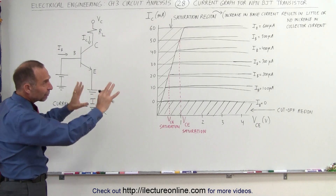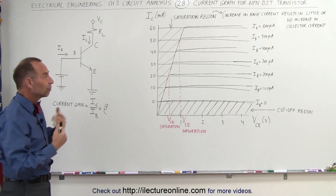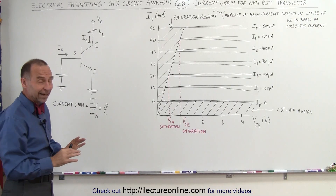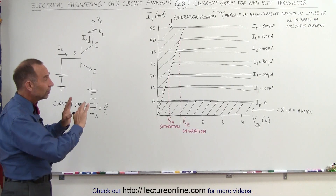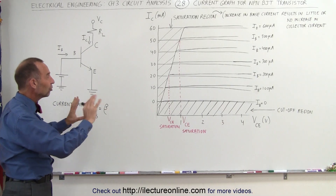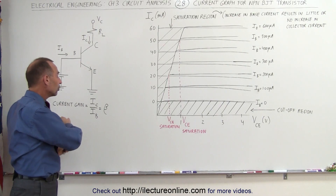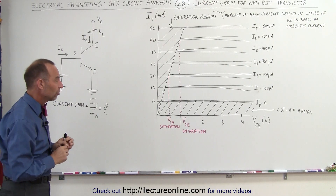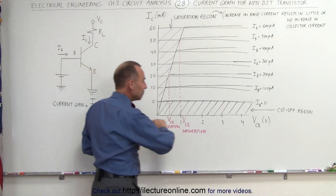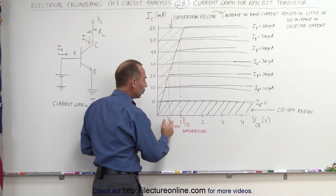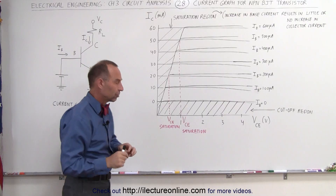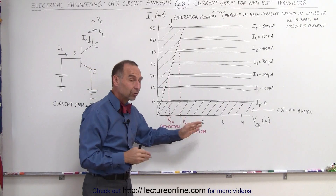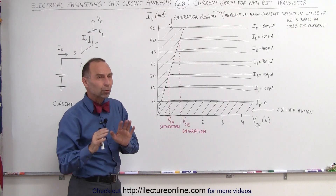This diagram here attempts to explain — and at first it's a little bit confusing — but it does explain how the relationship acts between the base current, the collector current, and the voltage applied to the transistor. At the bottom axis, we have the voltage applied to the collector, and the greater the voltage to the collector, the greater the current you can have, but to a limit.